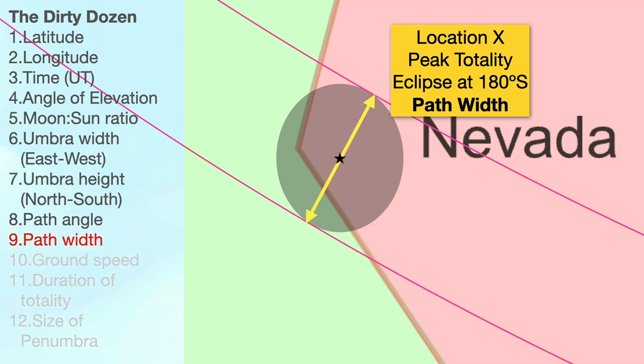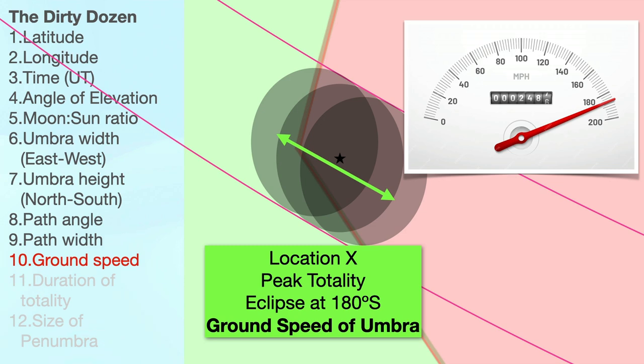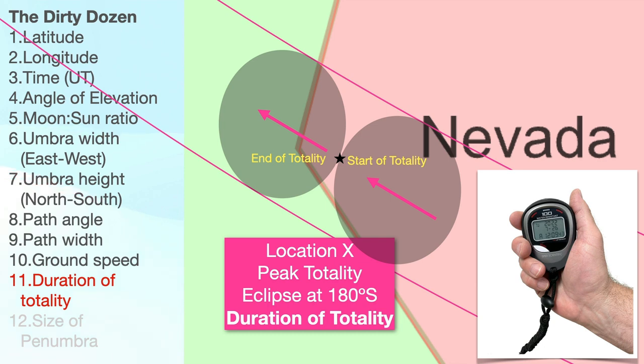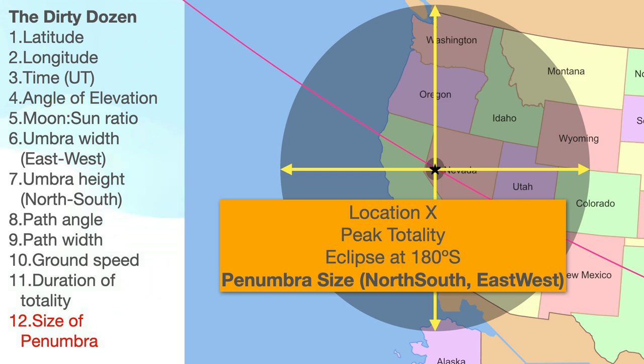What's the ground speed of the umbra as it travels this path? How long will totality last at location X? And lastly, most of the United States will see at least a partial eclipse. What's the size of the penumbra when location X is at peak totality? In other words, outside the penumbra boundary, the sun is not obscured at all at this moment in time. Technically, just like the umbra, the penumbra is not circular either. So you could break it down into north-south height and east-west width. If you get this far, you can call it the dirty baker's dozen.